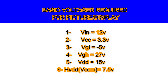The first part covers the types and details of voltages, and the problems and parts caused if these voltages are missing. The basic voltages required for picture and display are of six types. If these six voltages are present, your picture will be okay. Otherwise you will have a white display, bars on the screen, a black screen, or similar faults.